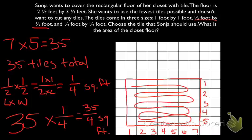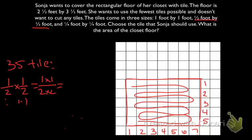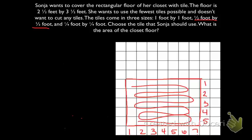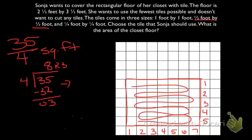The last thing we want to do is convert this into a mixed number. We have thirty-five fourths square feet. To change this from an improper fraction to a mixed number: four goes into thirty-five eight times since four times eight is thirty-two, with a remainder of three. So our mixed number is eight and three-quarters square feet. The area of Sonia's closet floor is eight and three-quarters square feet.